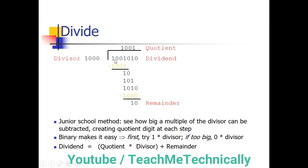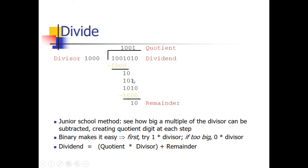We are checking whether 1001 is greater than 1000 or not. It is greater than the divisor, so we place 1 in the quotient and place the divisor 1000 here and perform the subtraction. After subtraction we get 1. This 1 comes here and according to the rule this 0 comes down. Now this value is smaller than the divisor, so we bring this bit down.